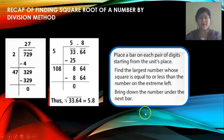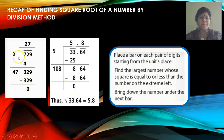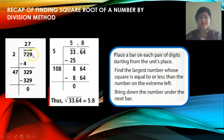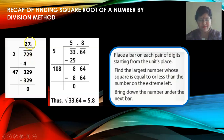Finding the square root of a number by long division method. The number given is 729. It is a perfect square of 27, which means the square root of 729 is 27.